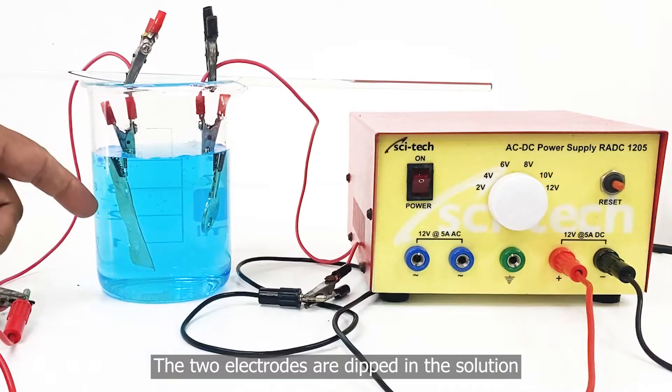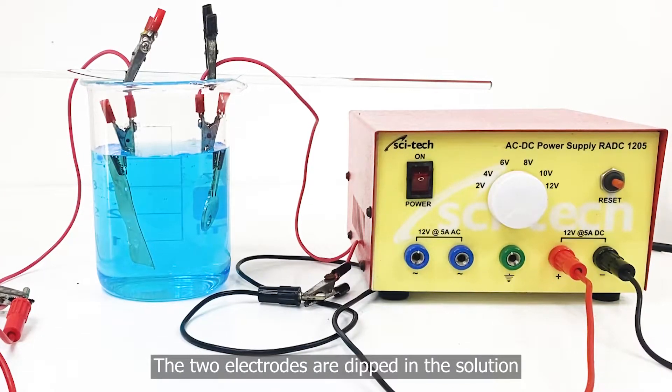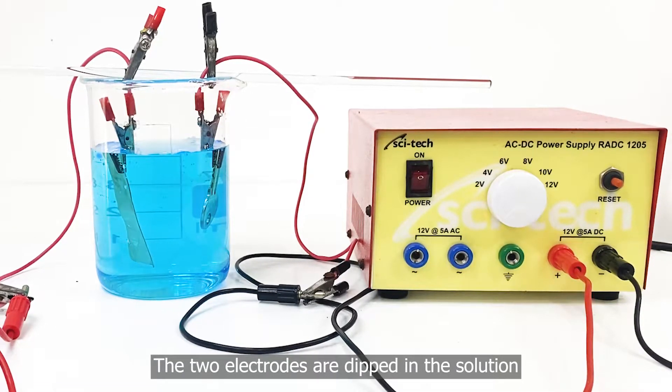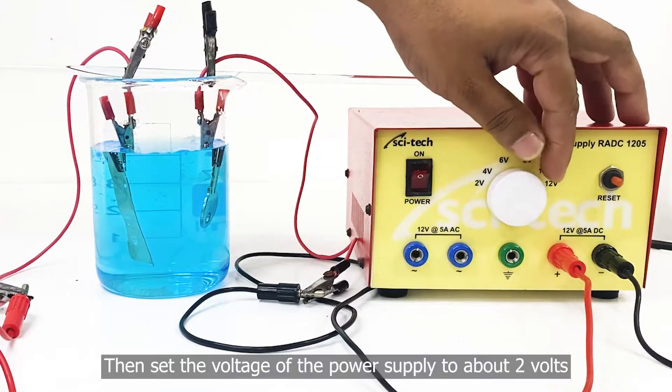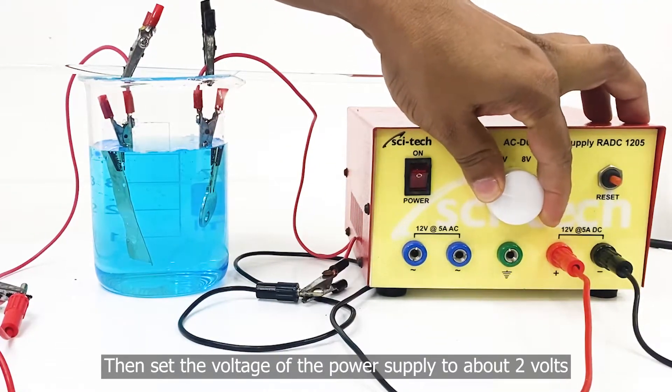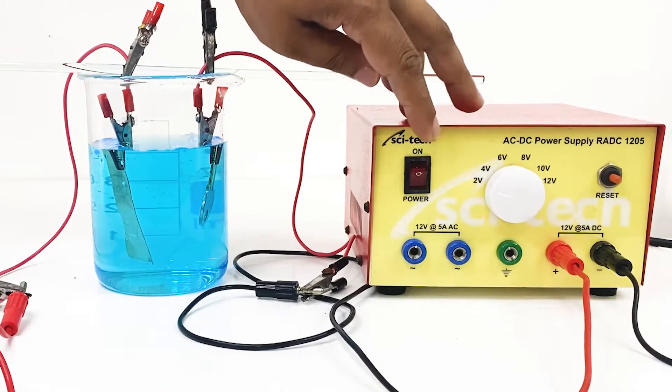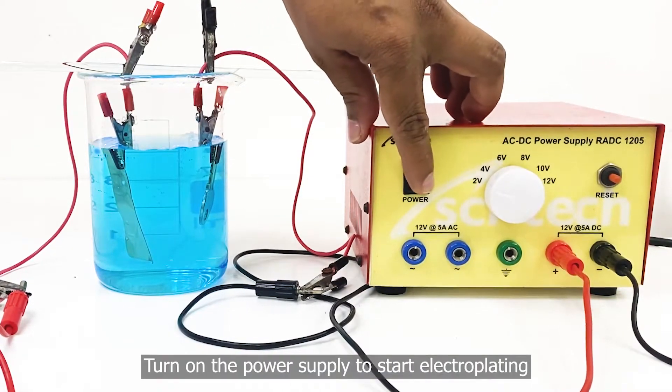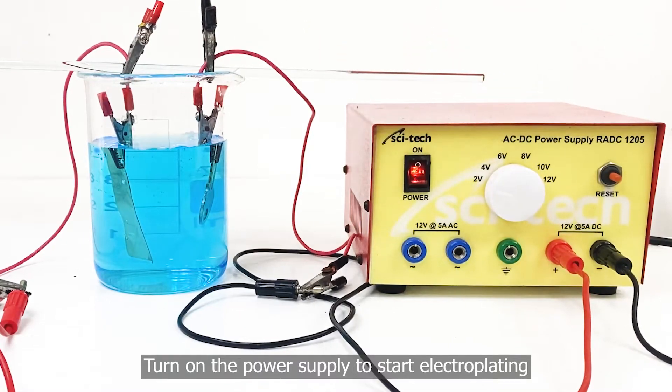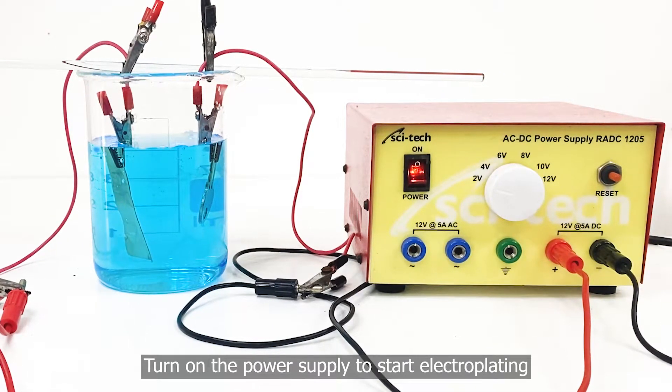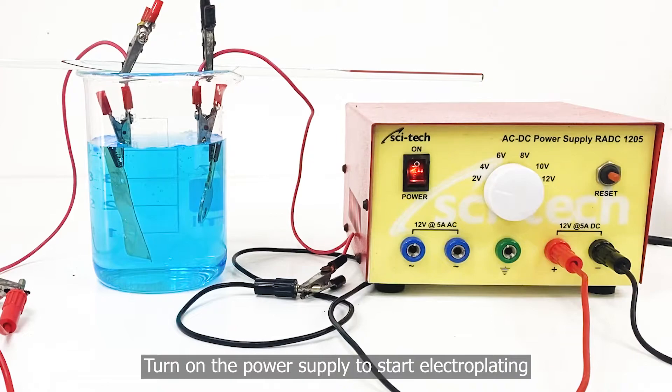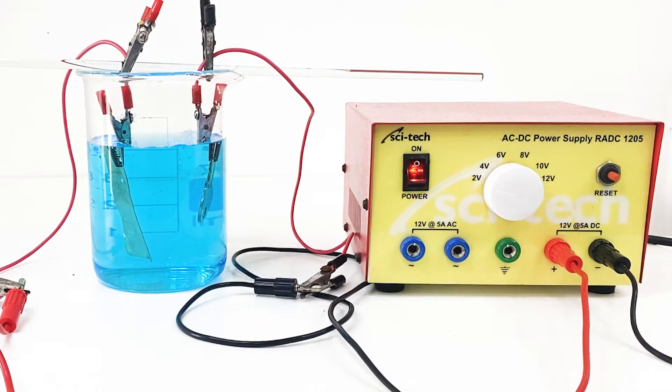The two electrodes are dipped in the solution. Then set the voltage of the power supply to about 2 volts. Turn on the power supply to start electroplating.